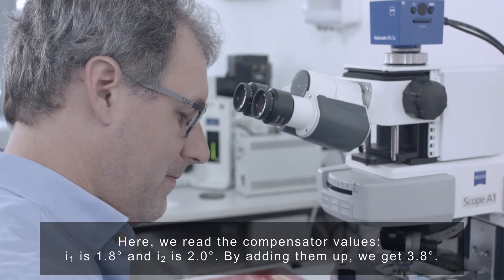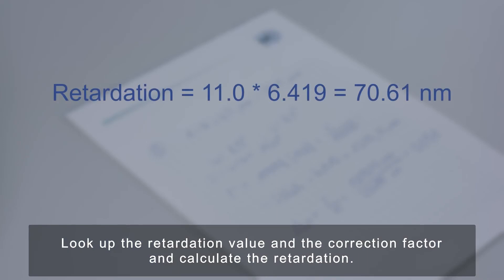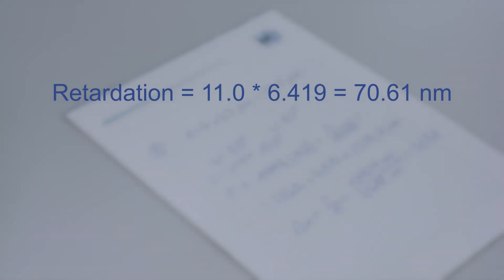By adding them up, we get 3.8 degrees. After looking up the retardation value and the correction factor, calculate the retardation. Here it is 70.61 nanometers. And finally, divide the retardation by the thickness of the fiber. The resulting birefringence is 0.002.